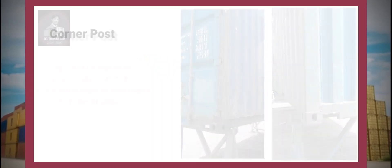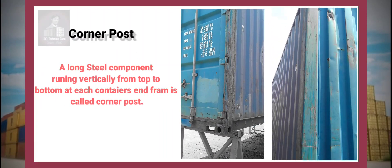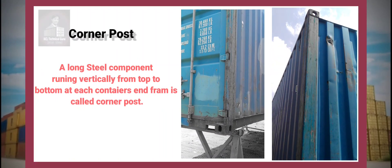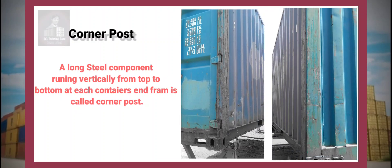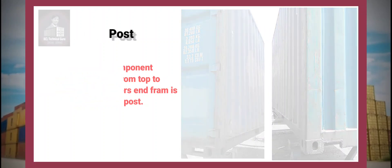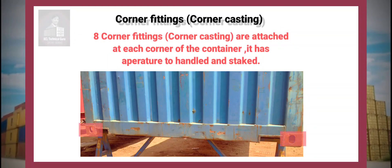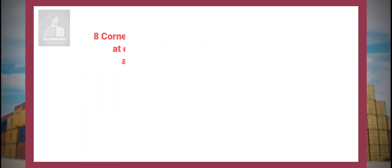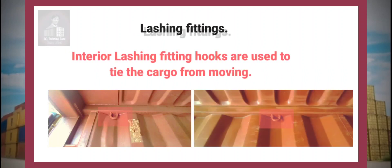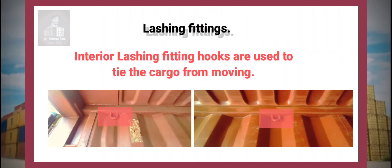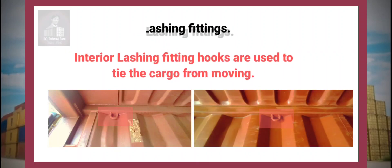A long steel component running vertically from top to bottom at each container's end frame is called a corner post. Eight corner fittings, also called corner castings, are attached at each corner of the container — they have apertures for handling and stacking. Interior lashing fitting hooks are used to secure the cargo from moving.